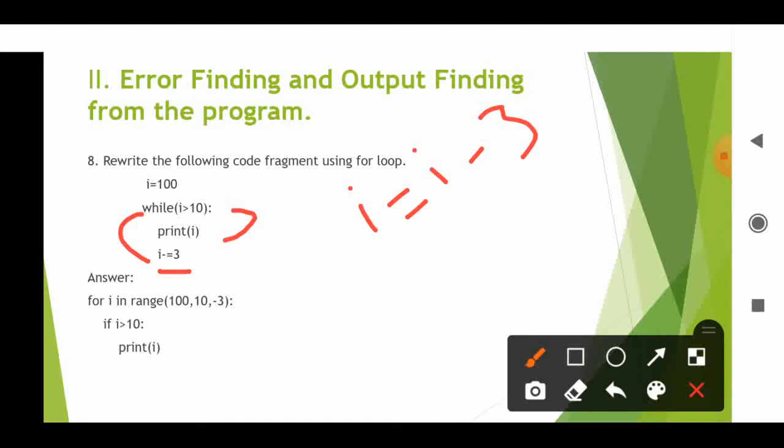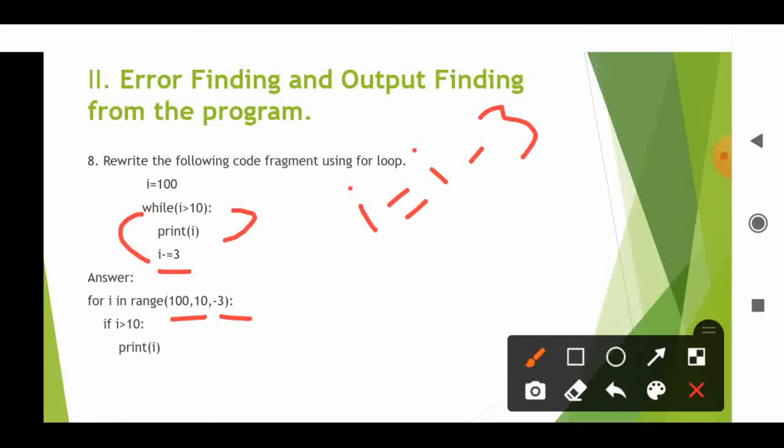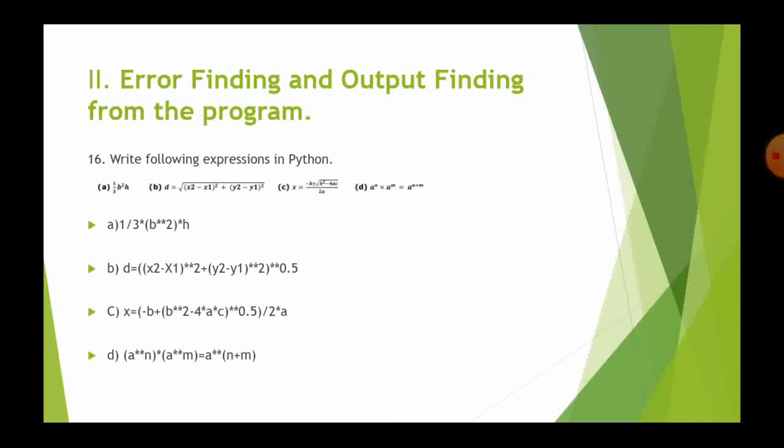To rewrite using a for loop: for i in range(100, 10, -3), then print i. The range starts at 100, stops at 10, with a step of minus 3 because i equal to i minus 3. This will continue until the range is exhausted. This is how you convert a while loop to a for loop.